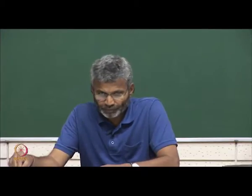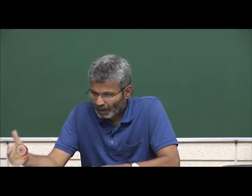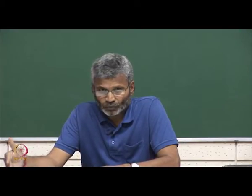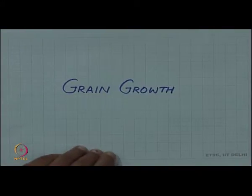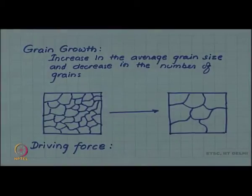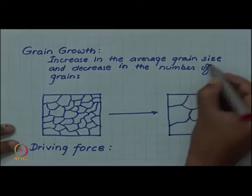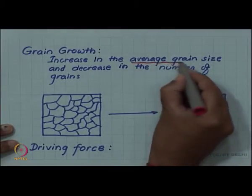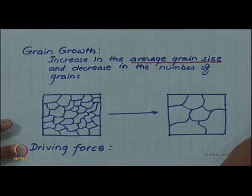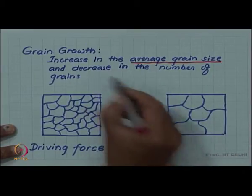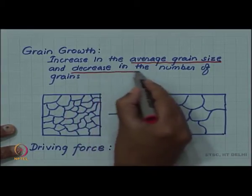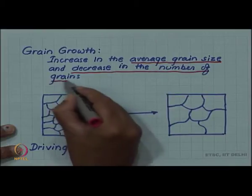The final stage of annealing is grain growth. The first stage is recovery, the second is recrystallization, and it is followed by grain growth. Grain growth, as the name suggests, is an increase in the average grain size, and this obviously, since the total volume of the material is constant, will lead to a decrease in the number of grains.